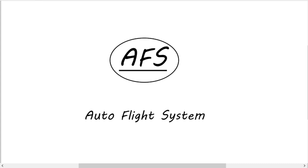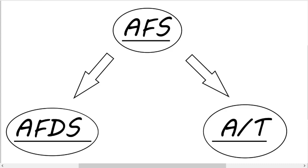Looking into the autoflight system we have to look at two different systems: the autopilot flight director system and the autothrottle. The autoflight system is composed of the autopilot flight director system and the autothrottle, and the flight management computer is only providing N1 limits and target N1 to the autothrottle, and command airspeeds for the autothrottle and AFDS. The AFDS and autothrottle are controlled using the AFDS mode control panel and the FMC.